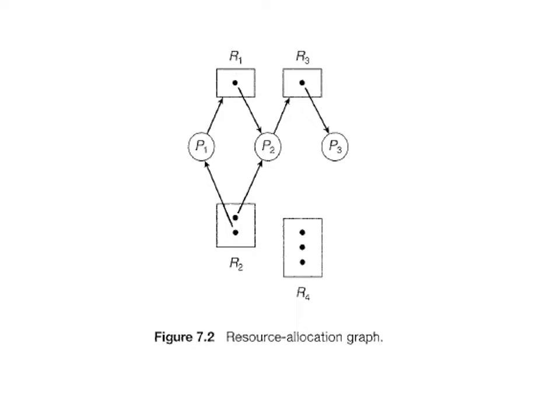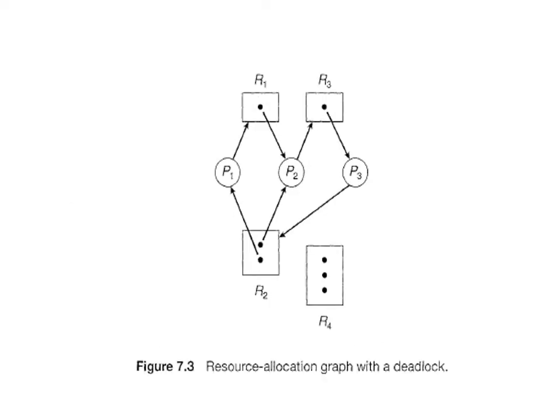If each resource type has several instances, then a cycle does not necessarily imply that a deadlock has occurred. In this case, a cycle in the graph is a necessary but not sufficient condition for the existence of deadlock. Suppose process P3 requests an instance of resource type R2 — since no resource instance is currently available, a request edge P3 → R2 is added to the graph.